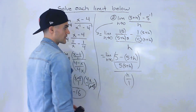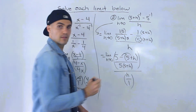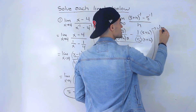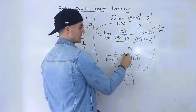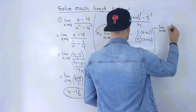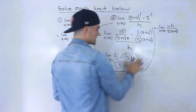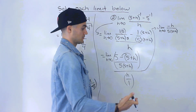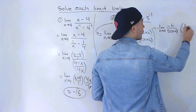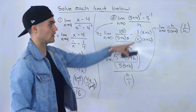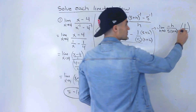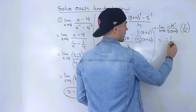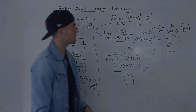We can simplify the numerator by distributing the negative inside the bracket: 5 minus 5 is 0, and negative times h gives negative h. So the numerator fraction becomes negative h over 5(5 plus h). Dividing by h over 1 is the same as multiplying by 1 over h, so those h's cancel. We're left with negative 1 over 5(5 plus 0), which is negative 1 over 25. So negative 1 over 25 is the answer to number two.